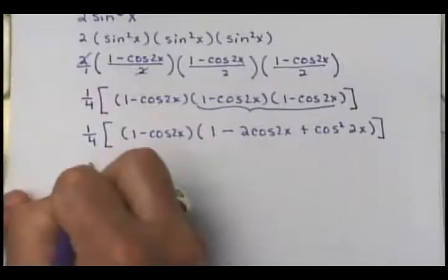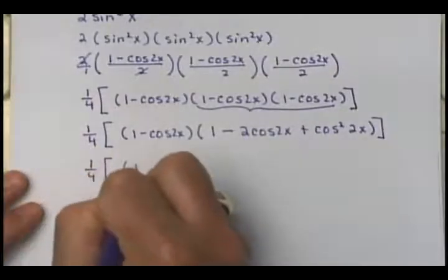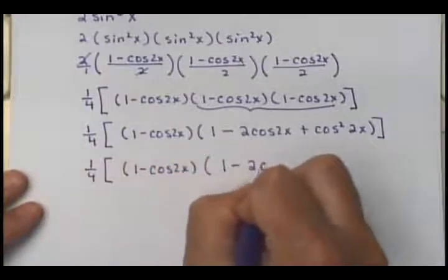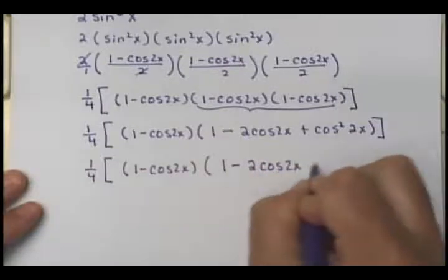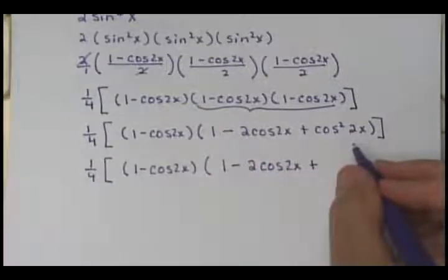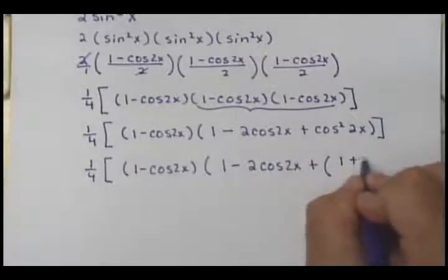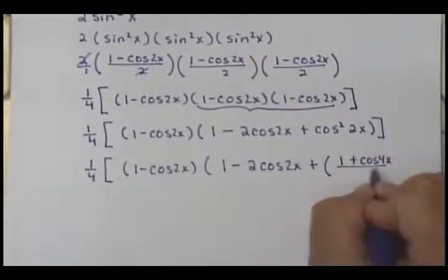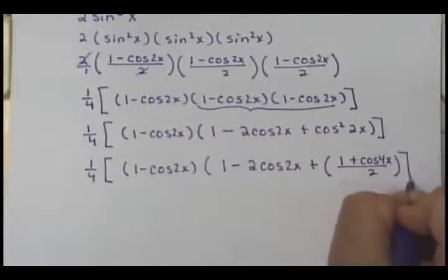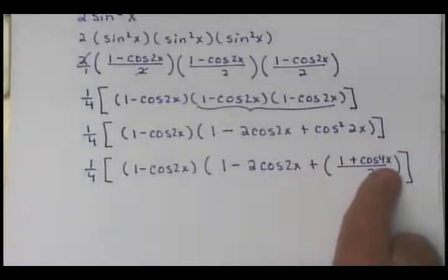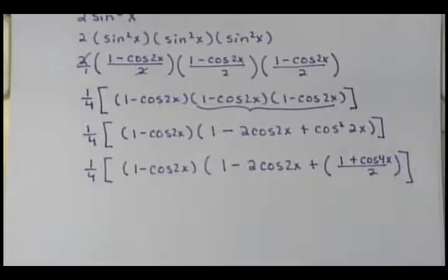So what we're going to do next is: this is 1 fourth times (1 minus cosine 2x) times (1 minus 2 cosine 2x plus cosine squared 2x), where cosine squared of 2x becomes 1 plus cosine 4x over 2, using our power reducing formula. Remember, it's 2 times whatever your angle is, and that's why it's 4x — 2 times 2 is 4.